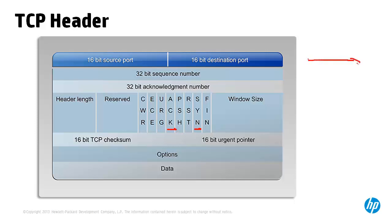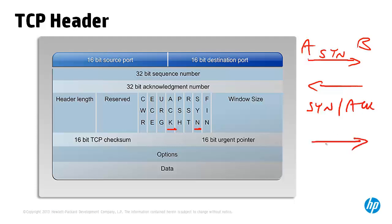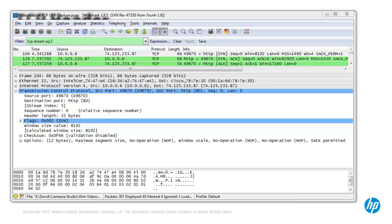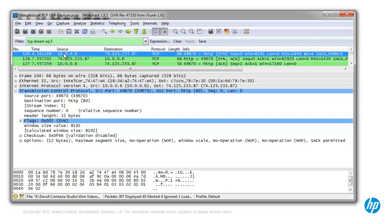When initiating a session between A and B, A will set the SYN flag on. B will then set the SYN-ACK flags on, and lastly A will send an ACK or acknowledgement. This is the famous three-way handshake in TCP. Before data is transmitted, TCP goes through a three-way handshake to initialize the session. Here's the same HTTP connection between my device 10.0.0.6 and Google.